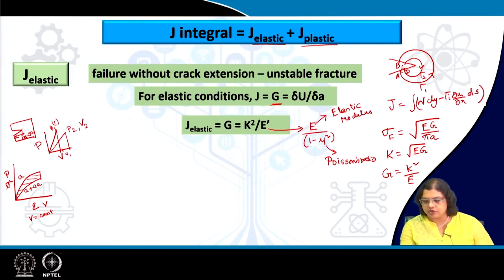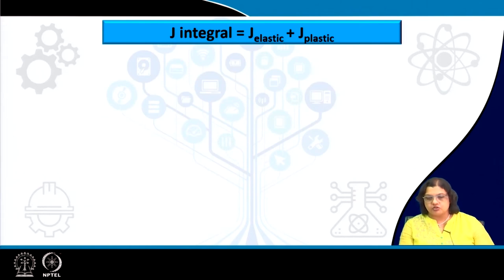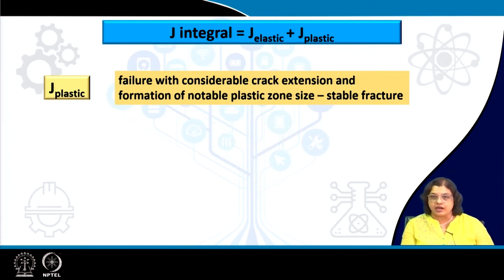Typically, the value of mu for metallic materials is around 0.33, though it can have different values for different kinds of materials. That covers J_elastic. Now moving on to J_plastic — J_plastic signifies some amount of crack extension due to the presence of a notable plastic zone size that can no longer be ignored, leading to stable fracture where crack propagation is slow, unlike the unstable elastic case.